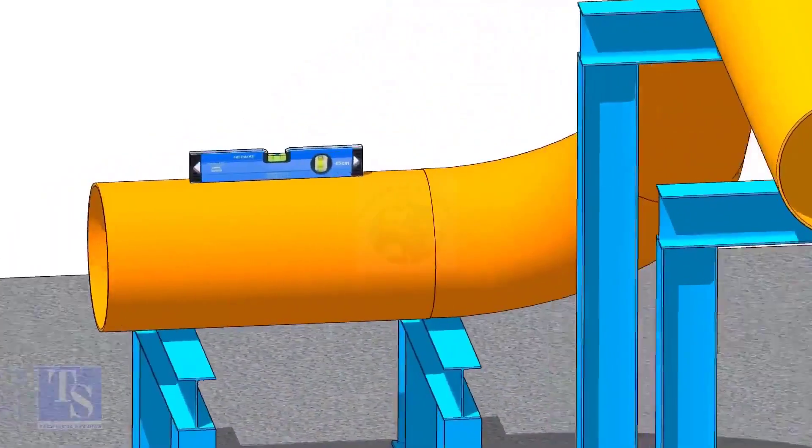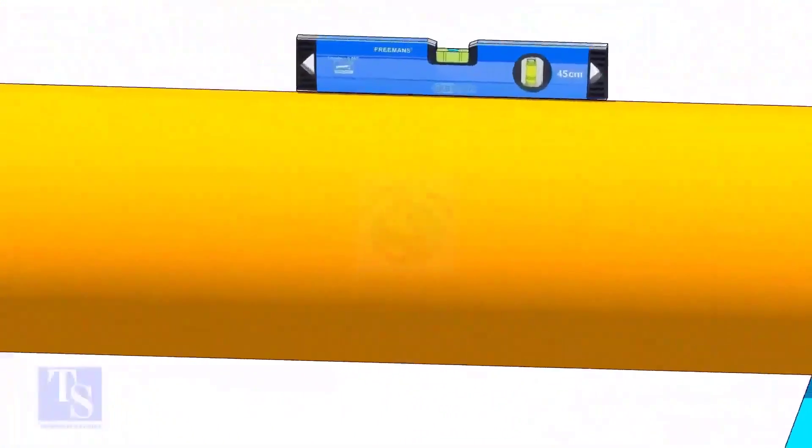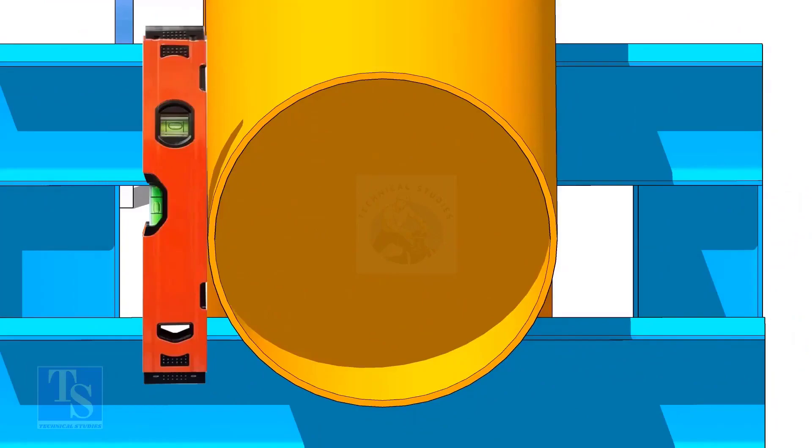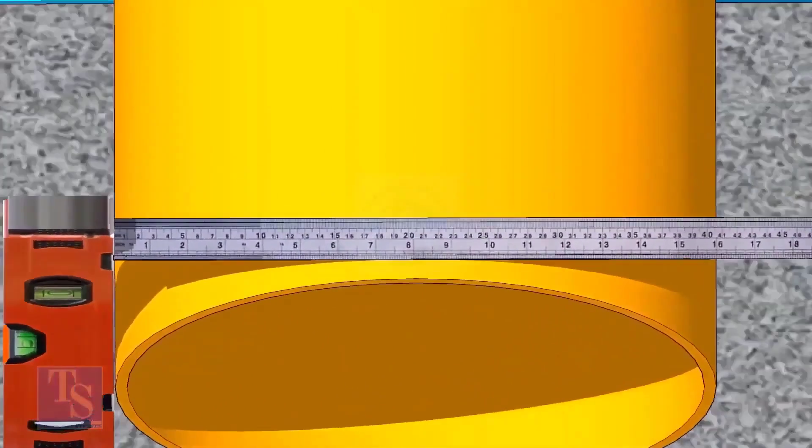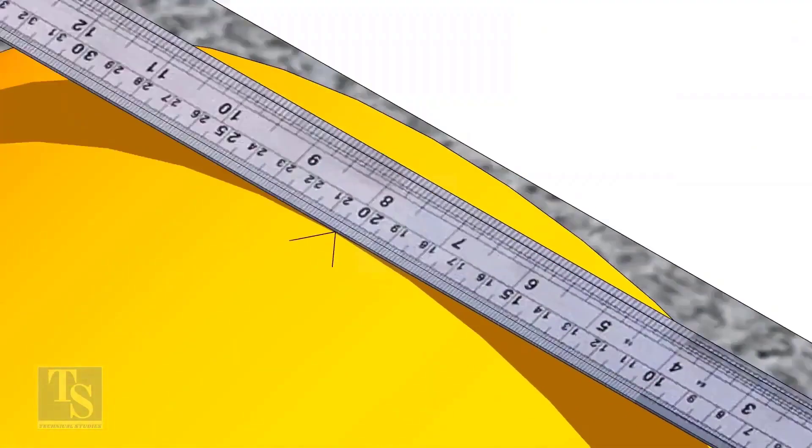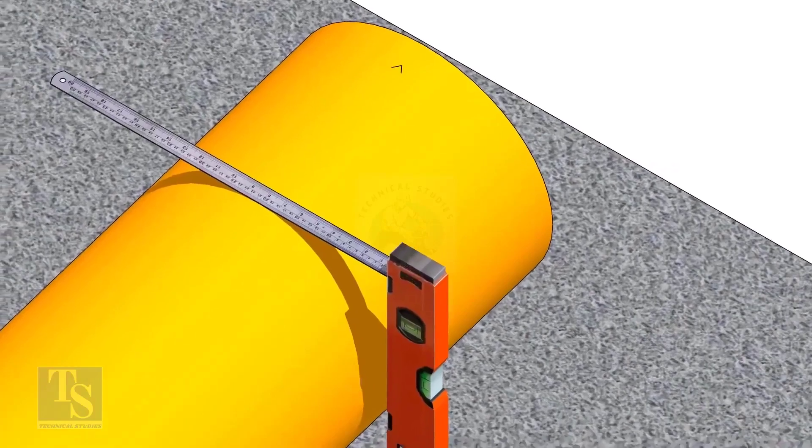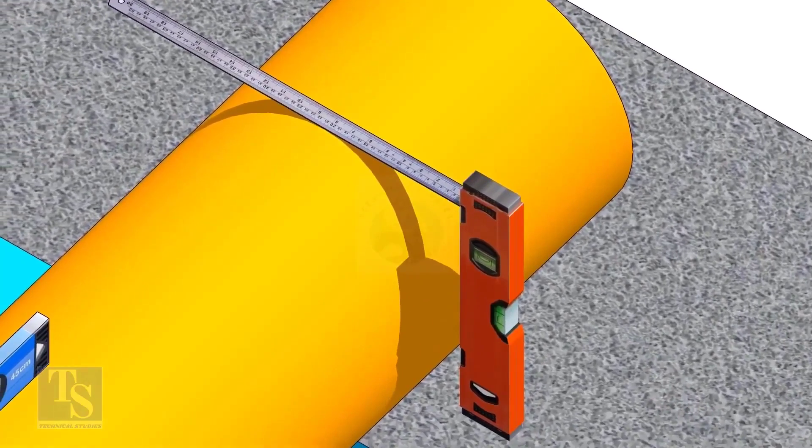After leveling the pipe, mark the center line. Don't forget to punch mark this line. Mark half OD at 300mm apart. This pipe OD is 406mm, so mark 203mm from the vertical level bottle on the top of the pipe and draw a line connecting these marks.